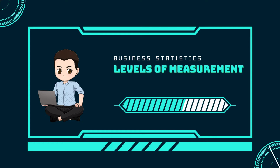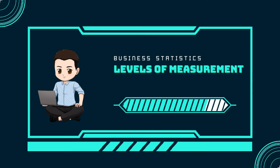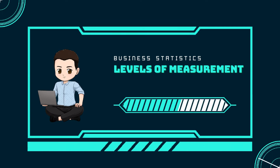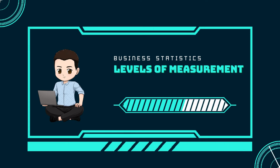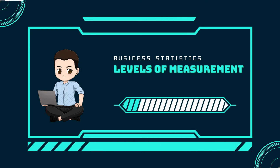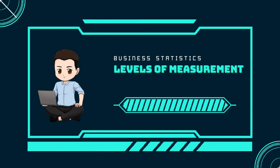Data measured using the interval scale is similar to ordinal level data because it has definite ordering, but there is a difference between data points. The differences between interval scale data can be measured, though the data does not have a starting point. Temperature scales like Celsius and Fahrenheit are measured using the interval scale. In both measurements, 40 degrees equals 100 degrees minus 60 degrees. Differences make sense, but zero degrees does not, because in both scales zero is not the absolute lowest temperature — temperatures like negative 10 degrees Fahrenheit and negative 15 degrees Celsius exist and are colder than zero.